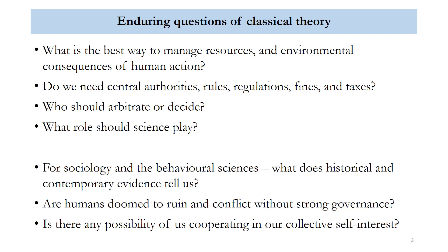The questions that interest Garrett Hardin and Elinor Ostrom are: whether humans are doomed to ruin and conflict without strong governance — whether unless humans have a firm hand directing and enforcing laws, punishments, and boundaries, we will simply outcompete each other and overexploit. Another question: is there another way? Is it possible that we could cooperate in our collective self-interest? If people were left to their own devices, could they form their own collectives that would act in an ecologically sustainable way? Do humans inevitably need strong government, rules and taxation, or is there a different way of doing things?